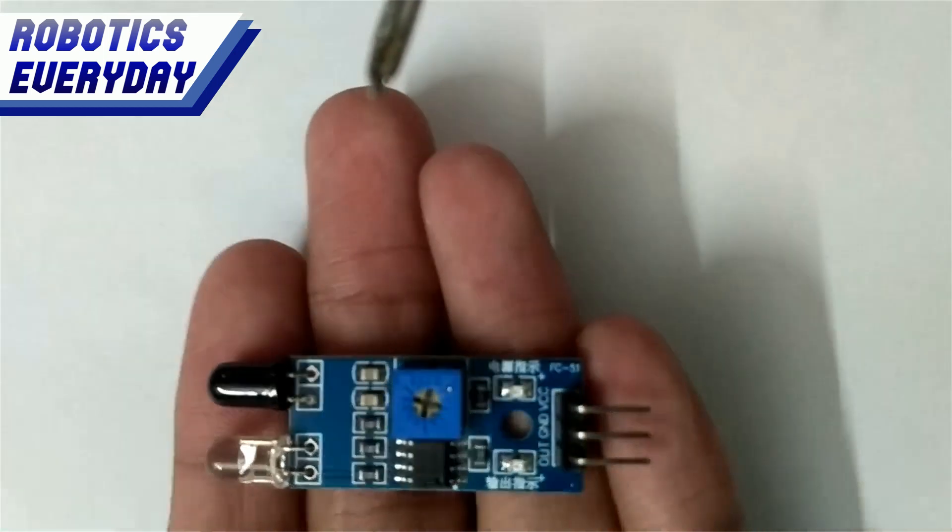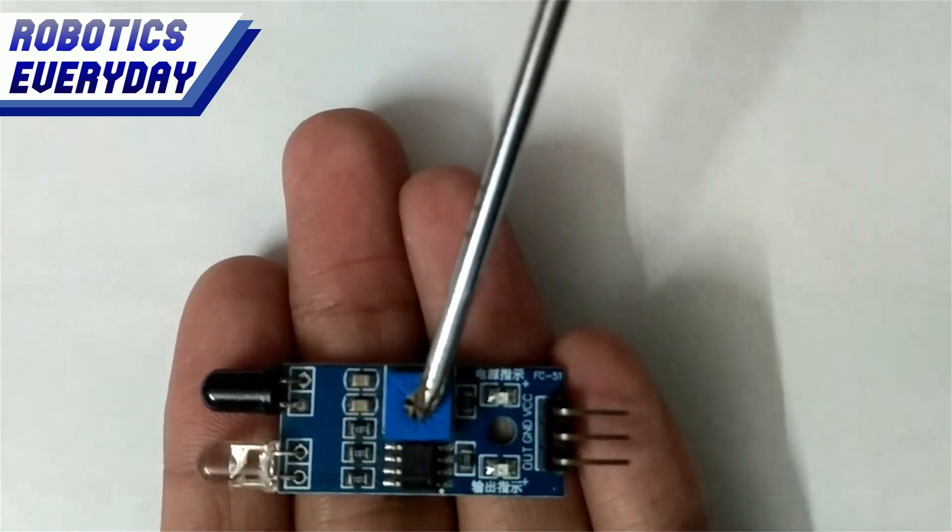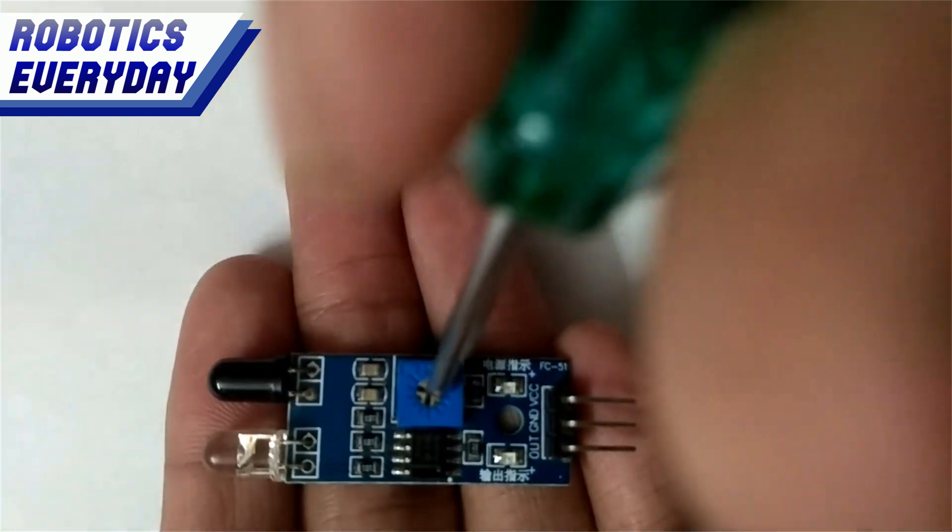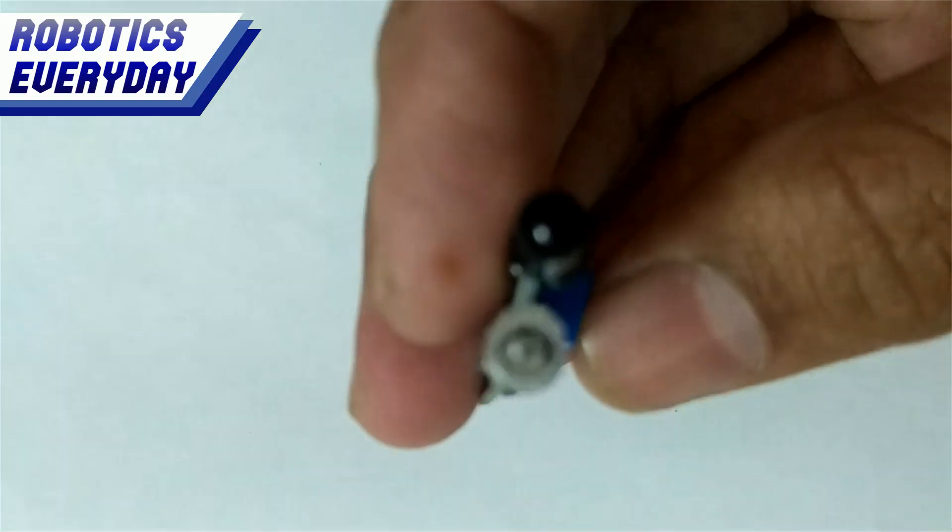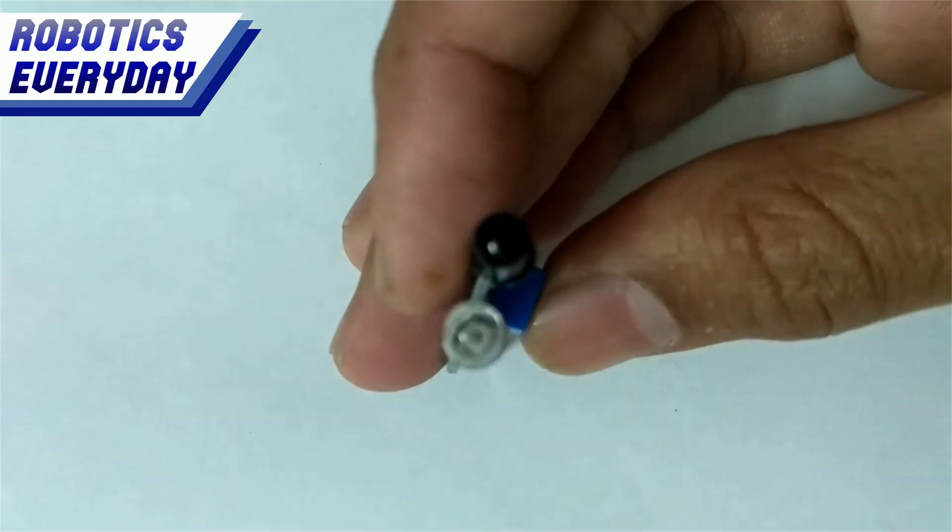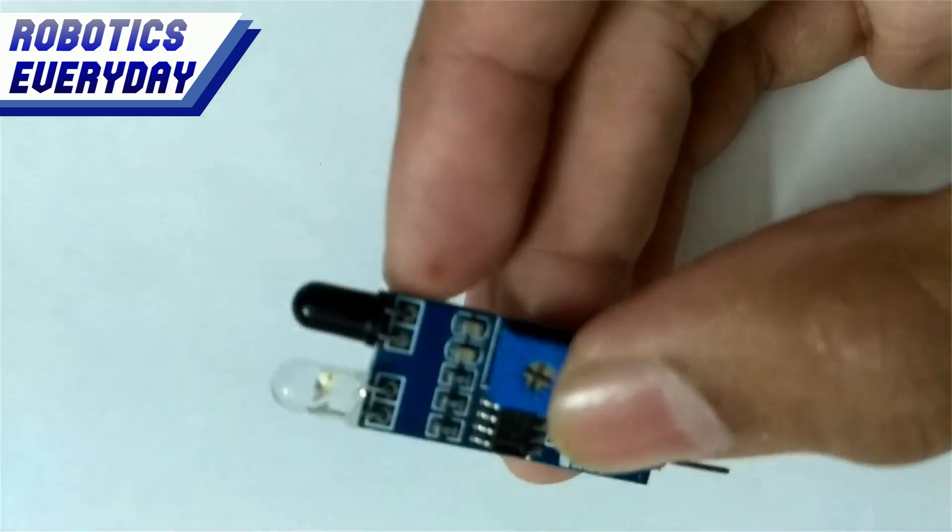And here we have a potentiometer to vary the threshold. The infrared LED outputs an infrared beam of light. If any object comes in front of it, then that object reflects some light rays. This reflected light is detected by the black colored LED-shaped detector.